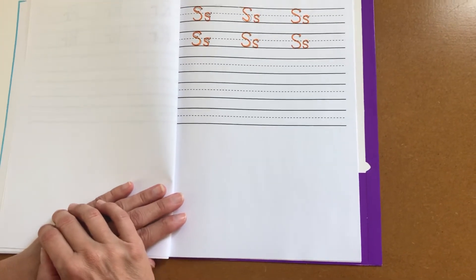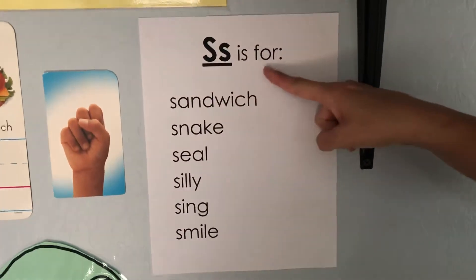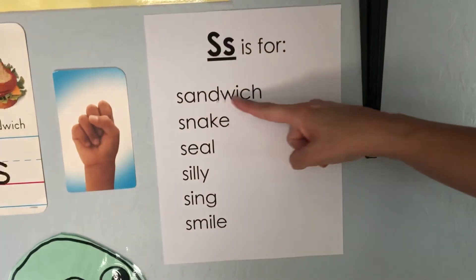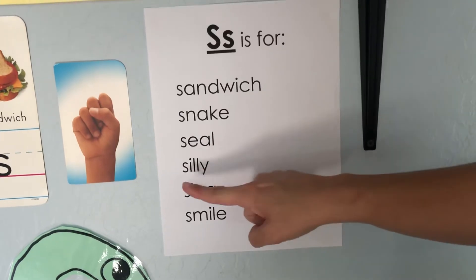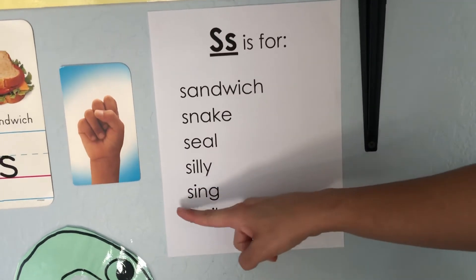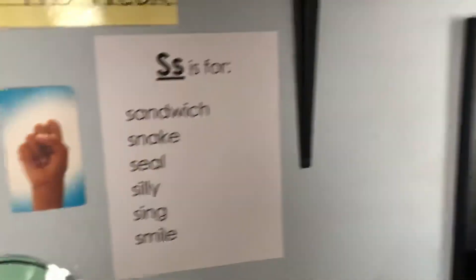Let's go back over to the wall so we can remind ourselves of some of the words that begin with the letter S. S is for sandwich, snake, seal, silly, sing, smile. And that's the end of center one instructions for the letter S.